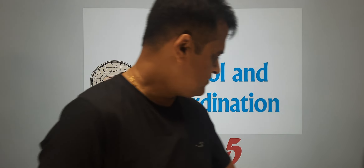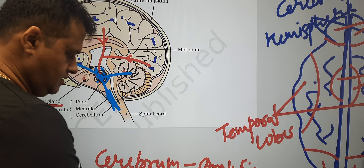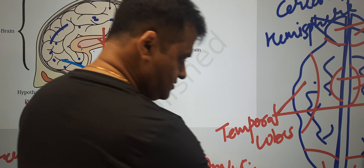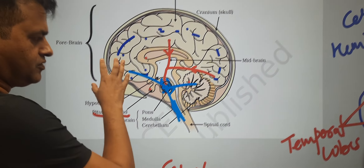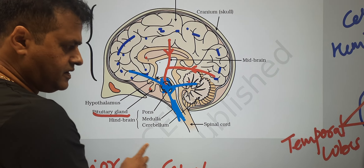In the last class we discussed about the functions of the brain. We have seen about the brain structure, different parts and their functions. I hope that this section is clear — I suggest you revise it properly: forebrain, midbrain, and hindbrain.